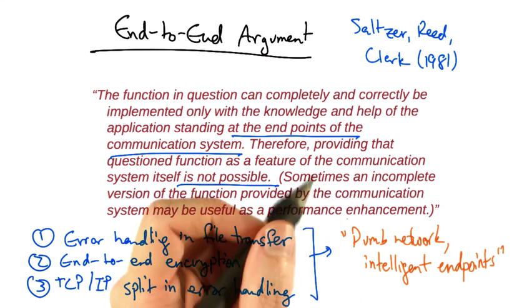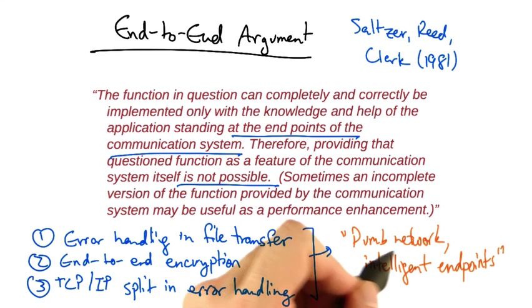Sometimes the end-to-end argument is summarized as the network should be dumb and minimal, and the endpoints should be intelligent.